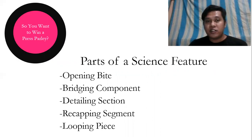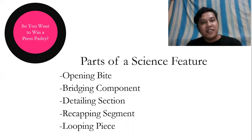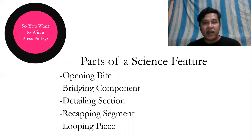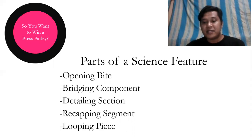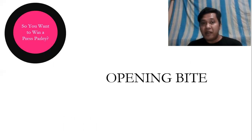In my next video, I'll be talking about the parts of a science feature, because we are already done with what to look for in a fact sheet and how to write a headline. This time, we shall start talking about the parts of a science feature and how you are going to introduce your topic based on the central issues found in the fact sheet and your headline. We have the following parts: the opening, the bridging component, the detailing section, the recapping segment, and the looping piece. In my next video I shall specifically focus on the opening. Please subscribe to my YouTube channel, So You Want to Win a Press Party.